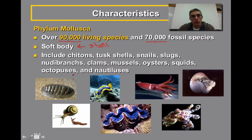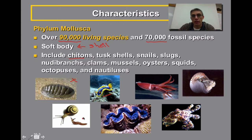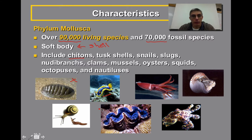Some examples of mollusks you see here include chitons, nudibranchs — which are very colorful in the ocean, kind of like a slug you might find on land — squids, nautilus, and down towards the lower right, a blue-ringed octopus. Here is a giant clam, which can get to over a meter in length and weigh as much as 500 pounds — one of the largest mollusks we have. Over on the left-hand side, we have terrestrial mollusks: a snail and a slug right below it. Most mollusks live in the water, but we do have a few that live on land.